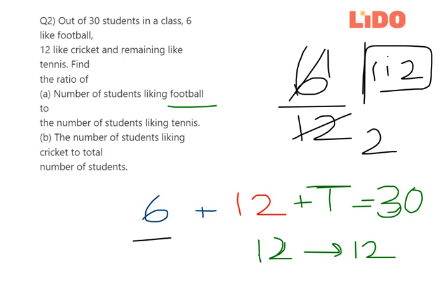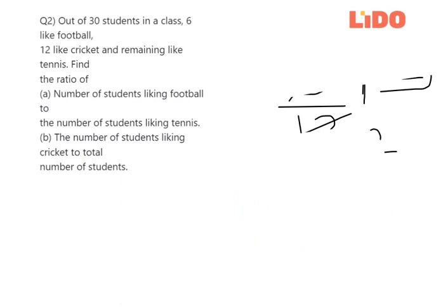The B part is: the number of students liking cricket to the total number of students. So the total students in the class is 30, and the number of students who like cricket are 12.